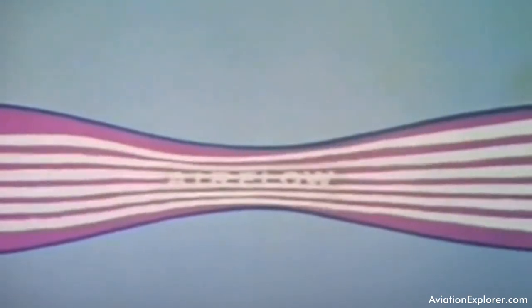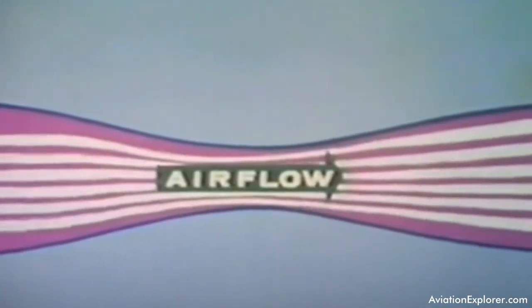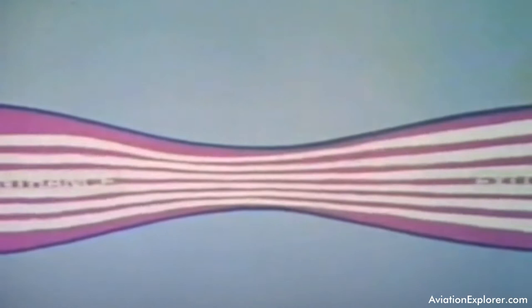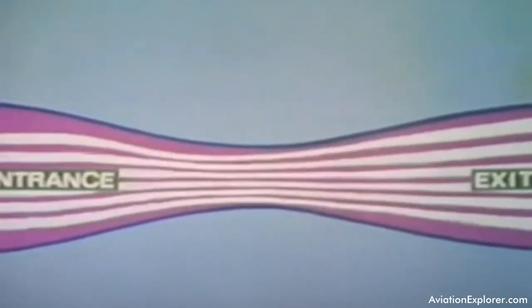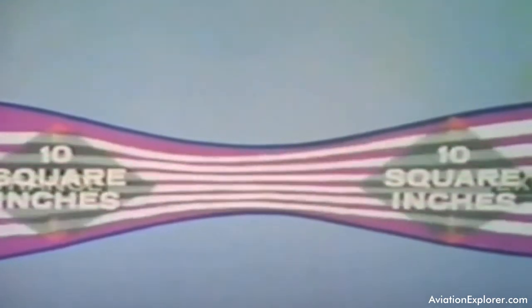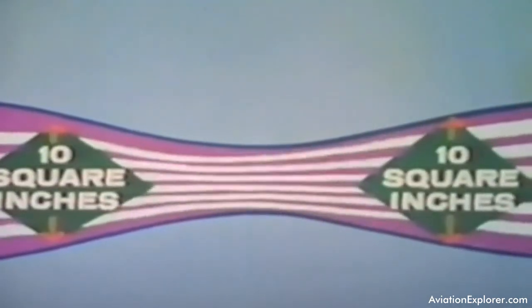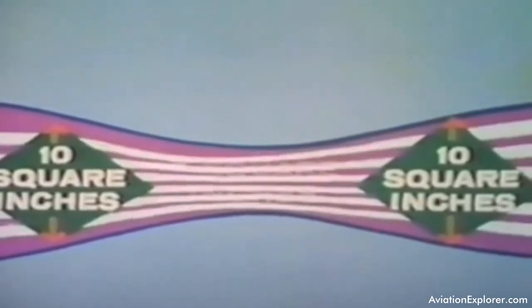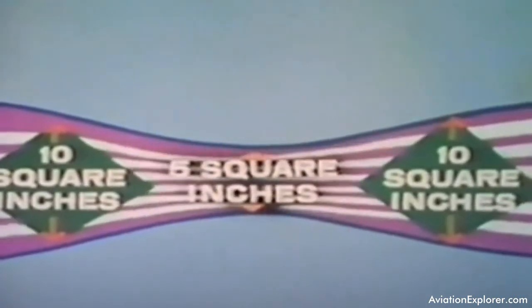First, note that its pattern suggests it is passing through a tube-shaped device. Next, notice that the entrance and exit of the device are the same size. We can measure the openings and find that the ends are each ten square inches. The middle part is squeezed, creating a throat of five square inches.